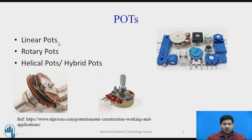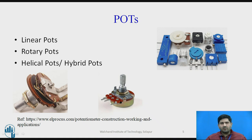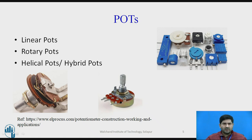Typically we have linear pots, rotary pots, and some which are called helical or hybrid pots. This is an internal structure of a rotary potentiometer available in any electronic shop — you can open it up and see for yourself. You can also find what are called trimmers in electronics stores. These are cheaper versions and are not used for sophisticated sensing purposes, but are often used to regulate voltages and currents on breadboards and circuit boards.